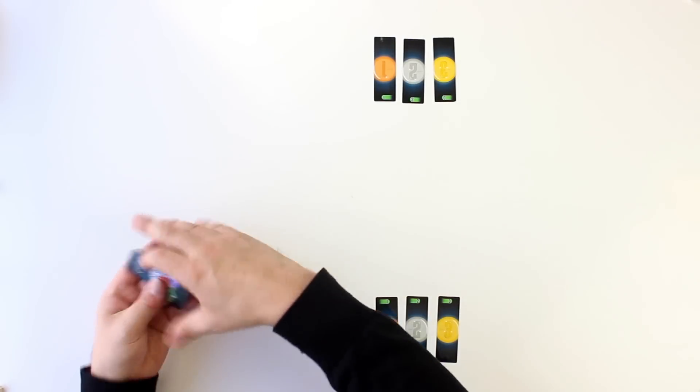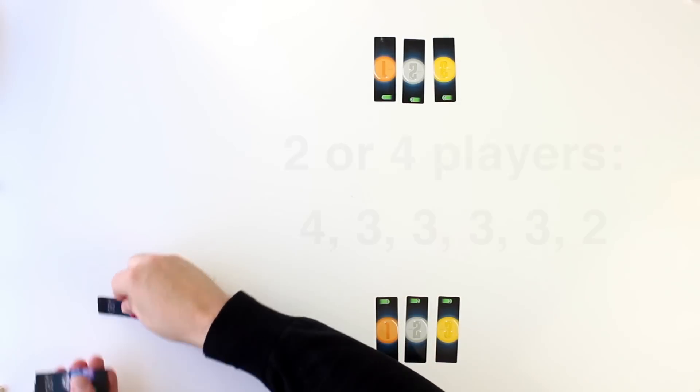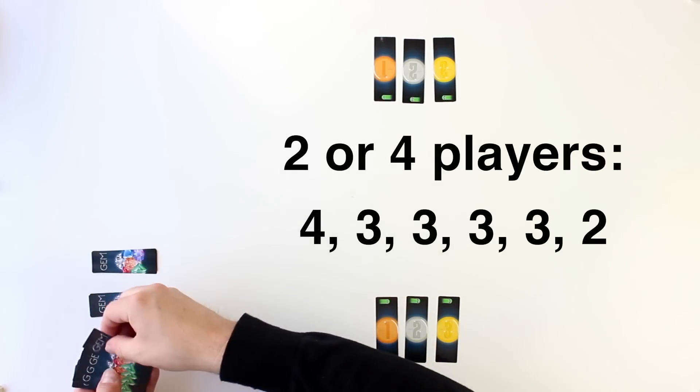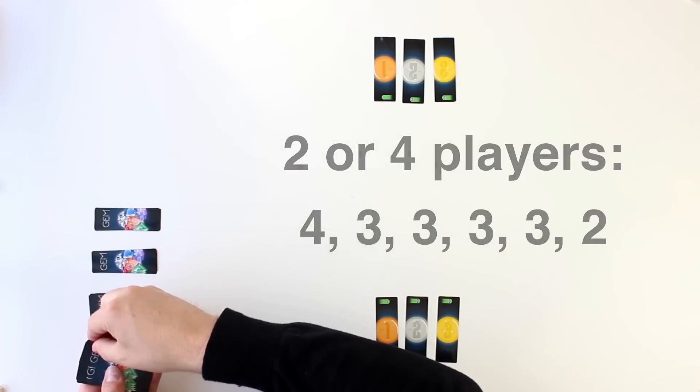Shuffle the gem cards and deal out 6 stacks: 1 stack of 4, 4 stacks of 3, and 1 stack of 2, face down near the side of the playing area.